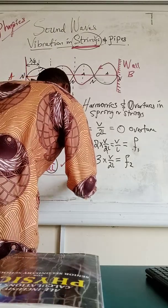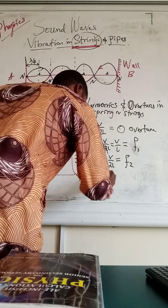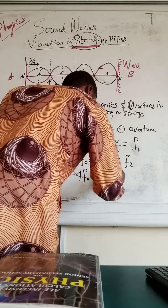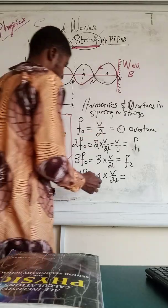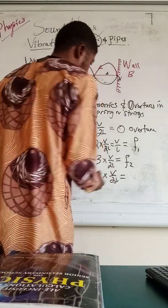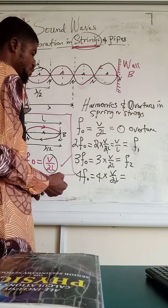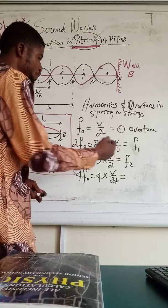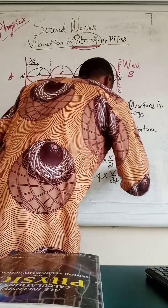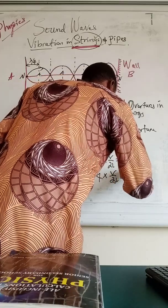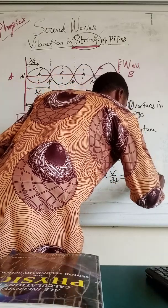The fourth harmonic, 4F naught, means 4 times V over 2L. Working it out, the 4 and 2 partially cancel, giving 2V over L. This corresponds to F₃, the third overtone.